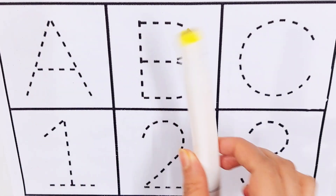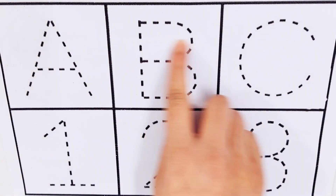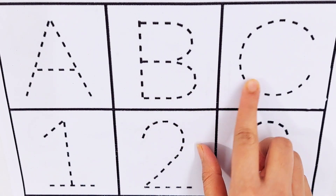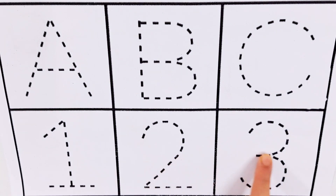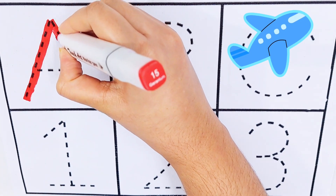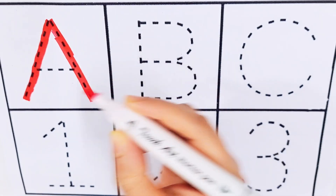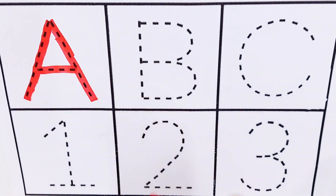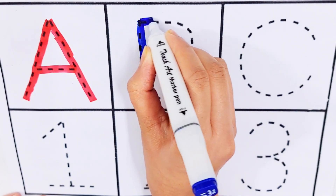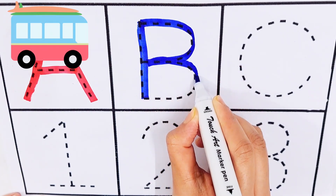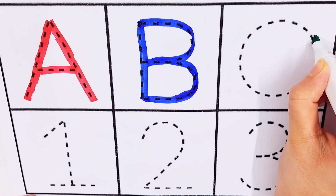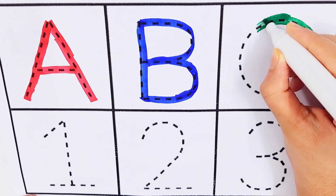Orange color, yellow color. Let's try to learn some alphabets and numbers. A, B, C. One, two, three. A — A for aeroplane. B — B for bus. C — C for car.